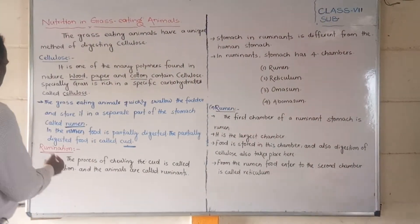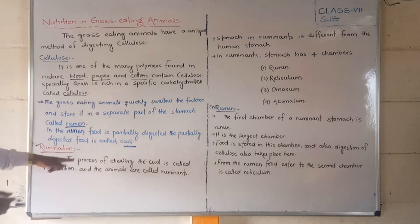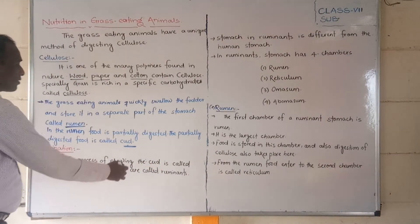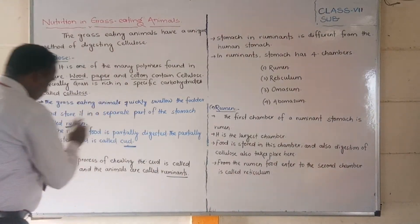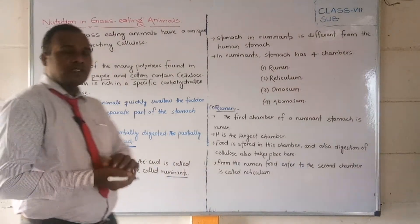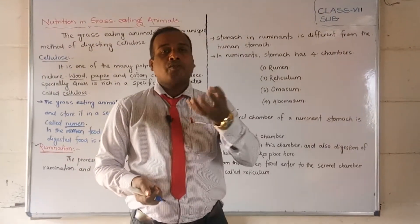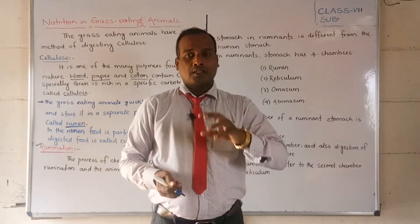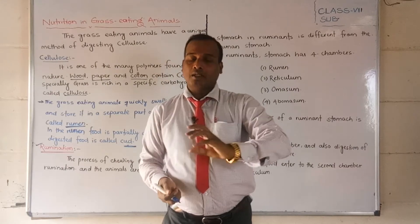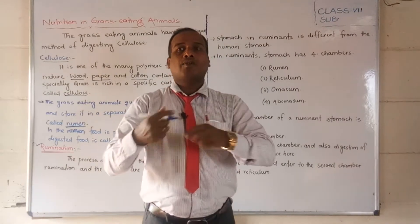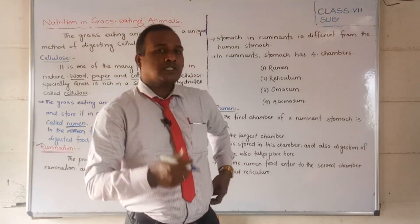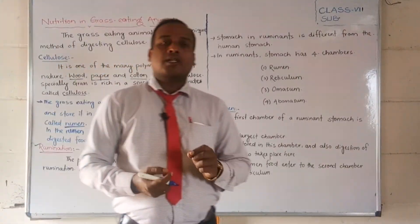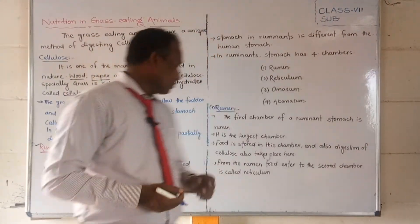So to summarize: the process of chewing the cud is called rumination, and the animals that perform this process are called ruminants. The cud is food that was quickly stored in the rumen and is then returned to the mouth for chewing before being swallowed again. Those animals performing this are called ruminants.